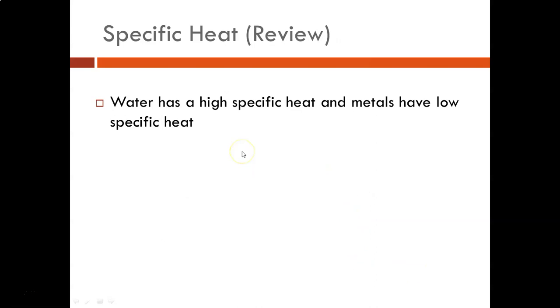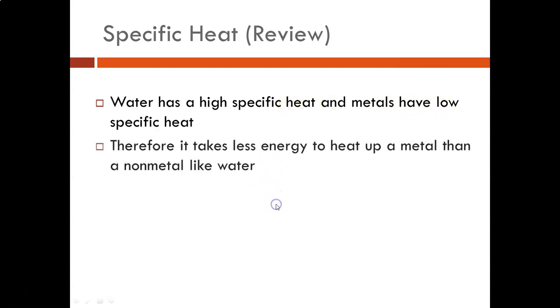Continuing on, we talked about the fact that water has a very high specific heat capacity compared with other things like metals that have very low specific heats. What does that mean? It's easy to raise the temperature of a metal because it has a low specific heat capacity. It's more difficult to change the temperature of water because it has a high specific heat capacity. So again, it takes way less energy to heat up a metal than it does a non-metal like water. That's why the beach is cooler in the summer and the sand gets so hot compared to the water.